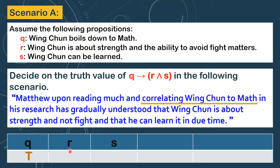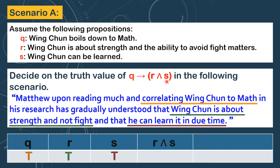What about R? Wing Chun is about strength and not fight. So the truth value of R is also T. And finally, what about the truth value for S? He can learn it in due time — so S is also true. Now, to get the truth value of this compound statement, let's first get the truth value of R and S. We're going to combine the truth value of R and the truth value of S — this is a conjunction. A conjunction is true when both combined values are true.